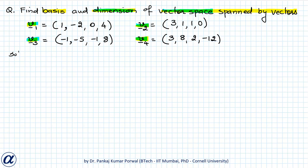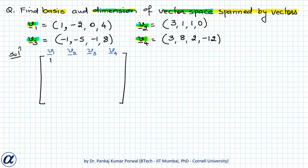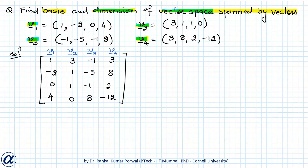Our matrix will have v1 as the first column, v2 as the second column, v3 as the third column, and v4 as the fourth column. So the matrix will be: 1, -2, 0, 4; 3, 1, 1, 0; -1, -5, -1, 8; 3, 8, 2, -12. To find the rank of this matrix, we will transform it into row echelon form using elementary row operations.